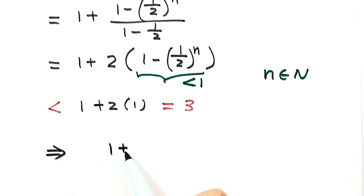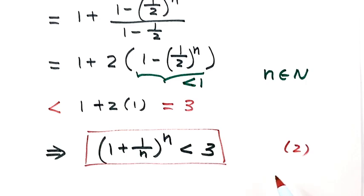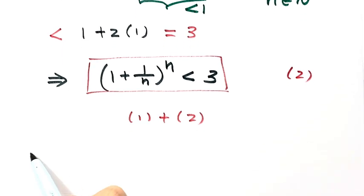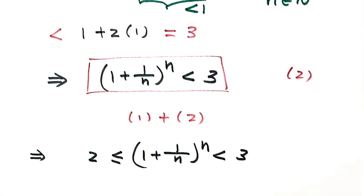So we've proved (1 + 1/n)^n < 3 — that's the second part. Combining both results: (1 + 1/n)^n ≥ 2 and (1 + 1/n)^n < 3, which completes the proof. Thanks for watching.